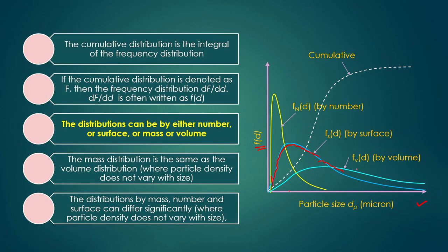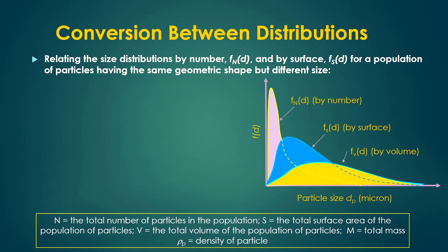You can also express the distribution in terms of volume. If you know the number of particles and the volume of each particle (1/6 · π · d³), then the total volume in a particular class is easily calculated. We can represent particle size distribution either by number, by surface, by volume, or by mass — and in all those cases you can also represent it as a cumulative distribution.